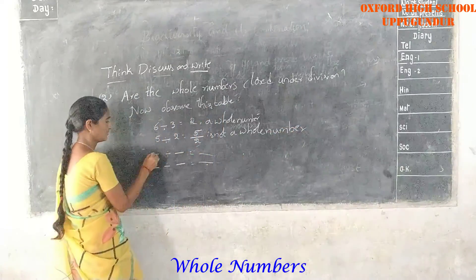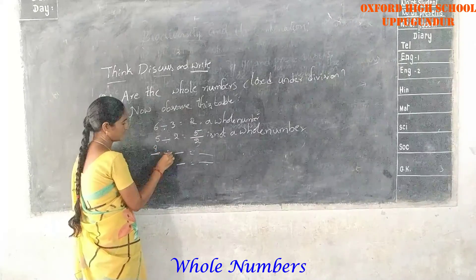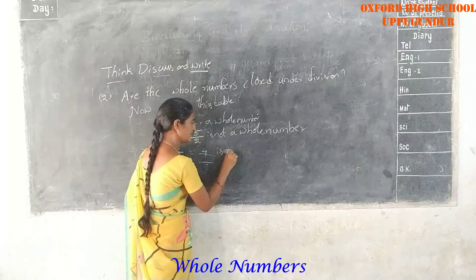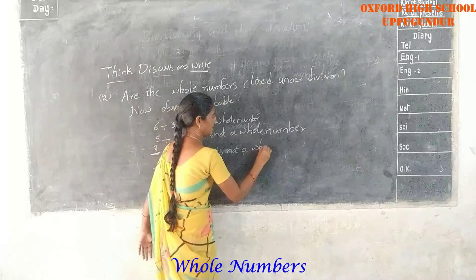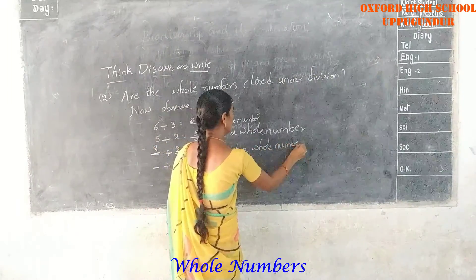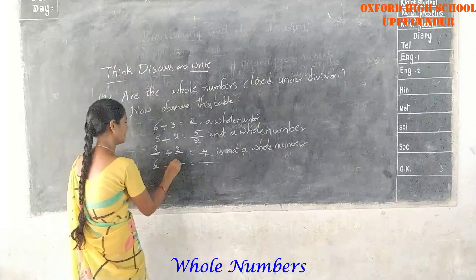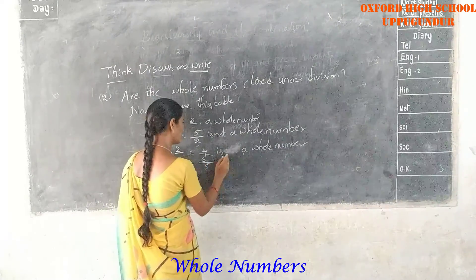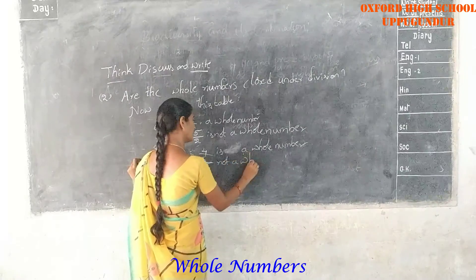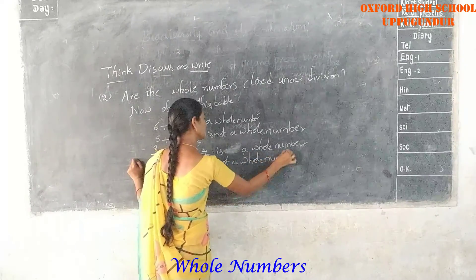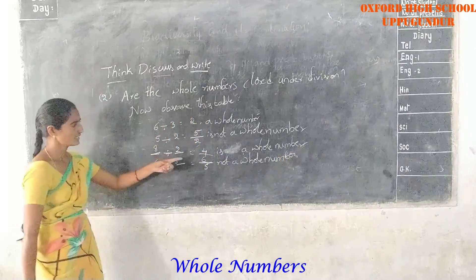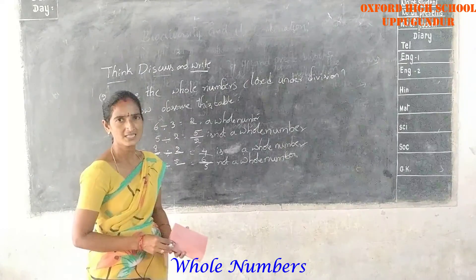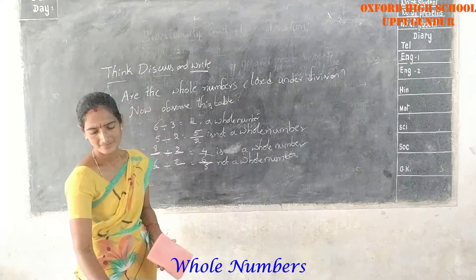For example, fill in the blank: 8 divided by 2 is 4 — is 4 a whole number? Yes. But 6 divided by 5 is not a whole number. Take more examples of this type, and write whether the result is a whole number or not a whole number.